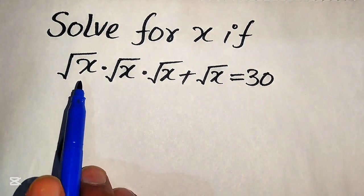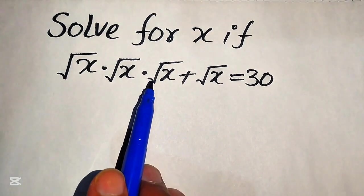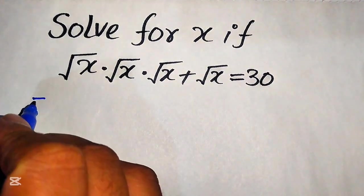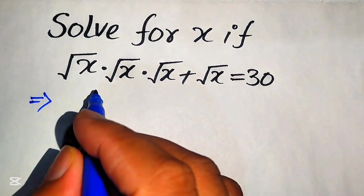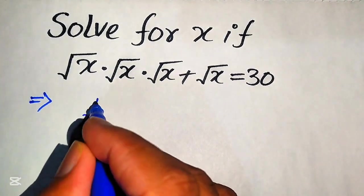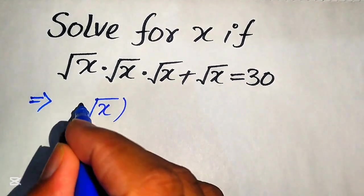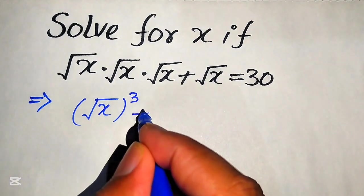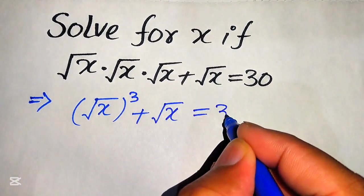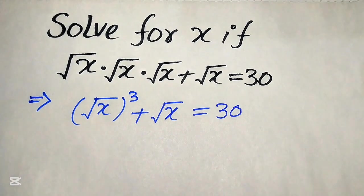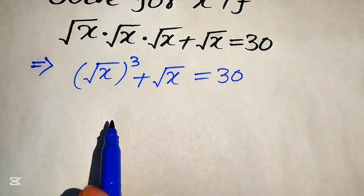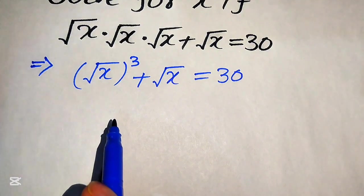The very first step: you can see that square root of x is multiplied three times. We know that when any number is multiplied three times, we write it in cubic form. So we write this as (√x)³ plus √x equals 30.